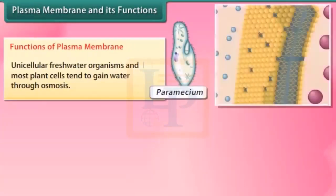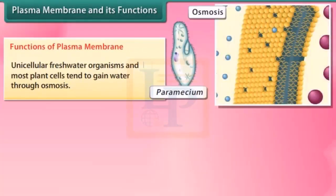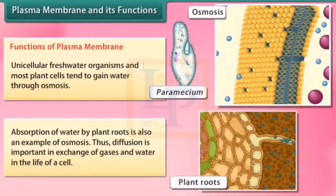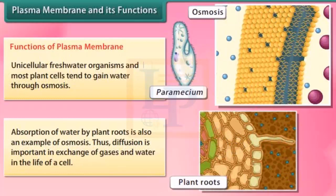Functions of plasma membrane: unicellular freshwater organisms and most plant cells tend to gain water through osmosis. Absorption of water by plant roots is also an example of osmosis. Thus diffusion is important in the exchange of gases and water in the life of a cell.